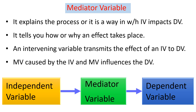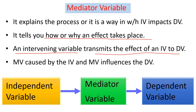The third type of research variable is the mediator. The mediator variable explains the process, or it is the way in which the independent variable affects the dependent variable. It serves as an intermediate variable — a part of the causal pathway from the independent variable towards the dependent variable. It tells you how or why an effect takes place. We can alternatively call it an intervening variable, which transmits the effect of the independent variable towards the dependent variable.